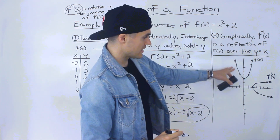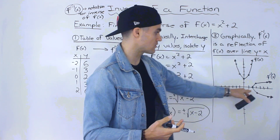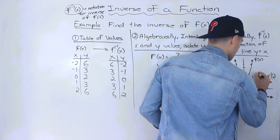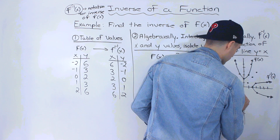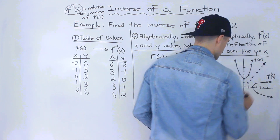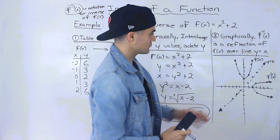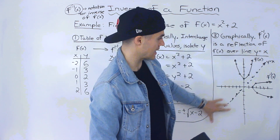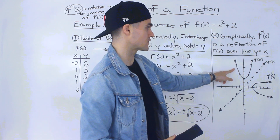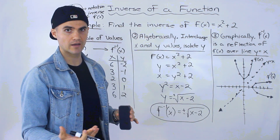Notice that the inverse is a reflection of the function over the line y equals x, or vice versa. If I draw the line y equals x — going through points like one and one, two and two, three and three, negative one and negative one, and so on — this is y equals x. If we take this function and reflect it over this line, we end up with the inverse, and reflecting over y equals x means interchanging the x and y values.